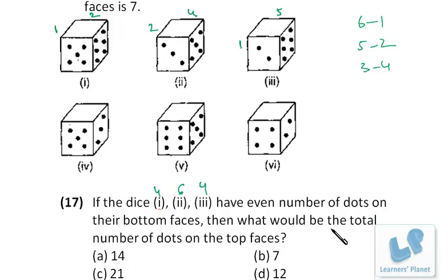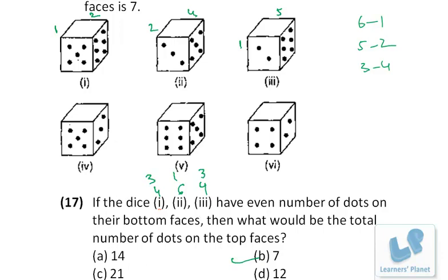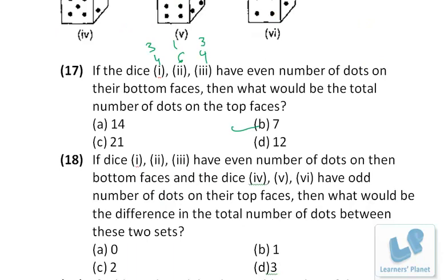We are asked the total number of dots on the top faces. The bottom faces are 4, 6, and 4, so the tops are 3, 1, and 3 — that's 3 + 1 + 3 = 7. It's very simple.